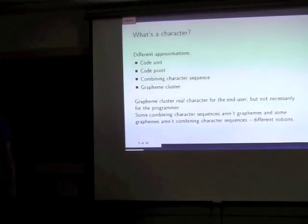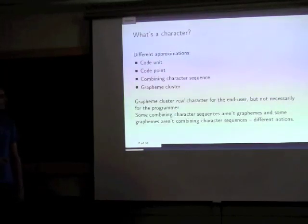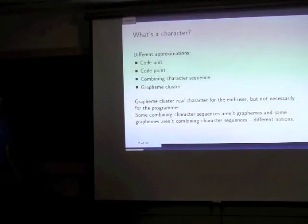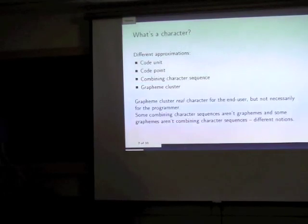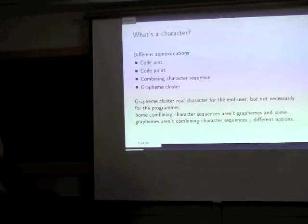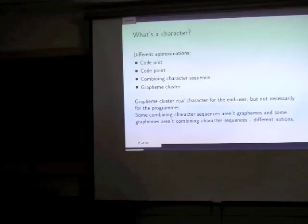So we've seen different ways to view a character: the code unit (the basic encoding unit in UTF), the code point (the entry in the Unicode character set), the combining character sequence, and the grapheme cluster (the abstract character as the user perceives it). What 'a character' means is really up to you — it depends on what level of granularity you need. Sometimes you just want to work at the code unit level or code point level. My library allows you to do all of that.